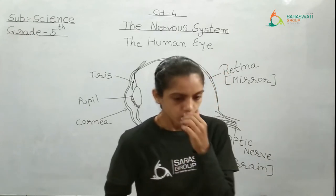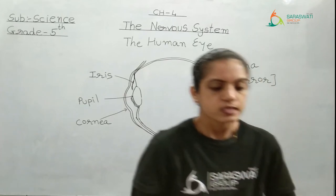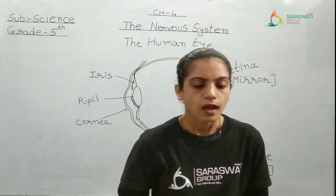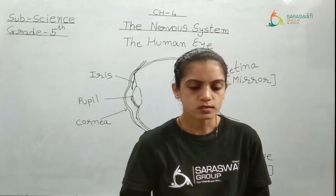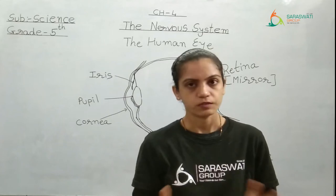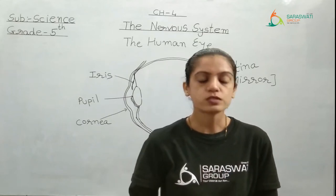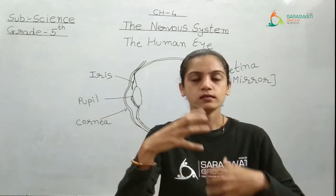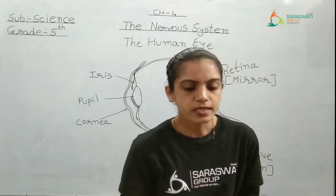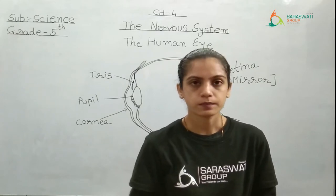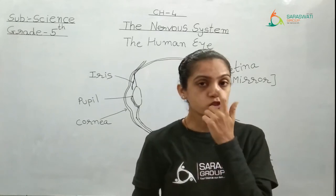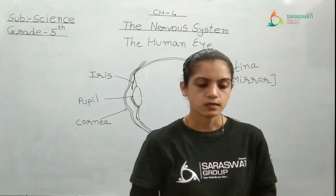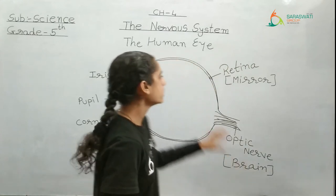Open page number 48: Sense organs. We have five sense organs: eyes, ears, nose, tongue, and skin. They help us to sense our surroundings — whatever things are going on around us, we can sense them. These sense organs allow us to see, to hear, to smell, to taste, and to feel. The first one we will study is the eye. You can see the diagram here, and you have to practice and learn this diagram.